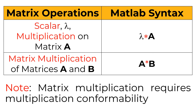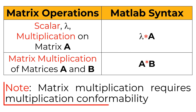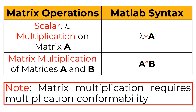For matrix multiplication, consider matrices A and B. You can use the star sign between two matrices. However, in order to multiply two matrices, the column size of matrix A must be the same as the row size of matrix B. Otherwise, it will give you an error message.